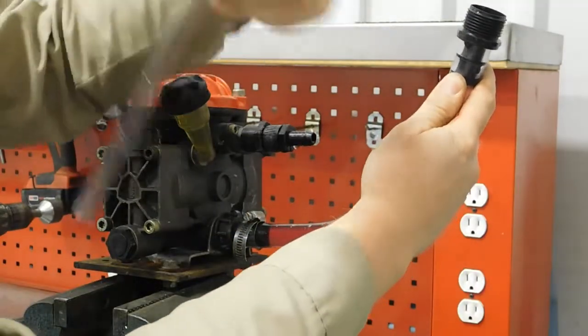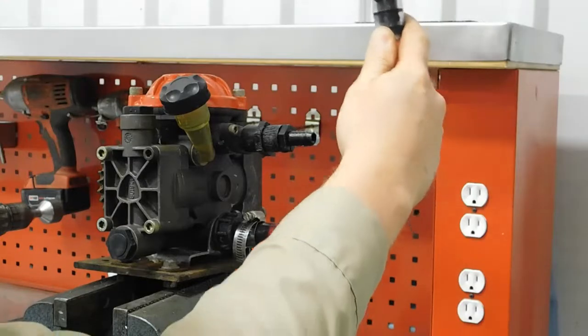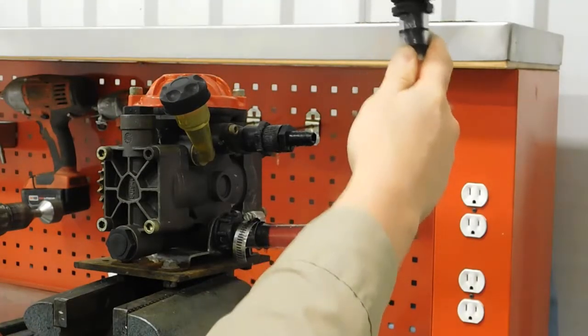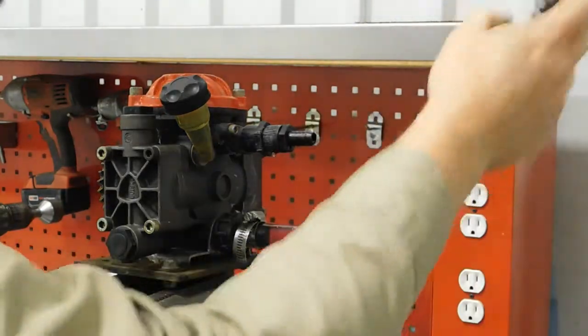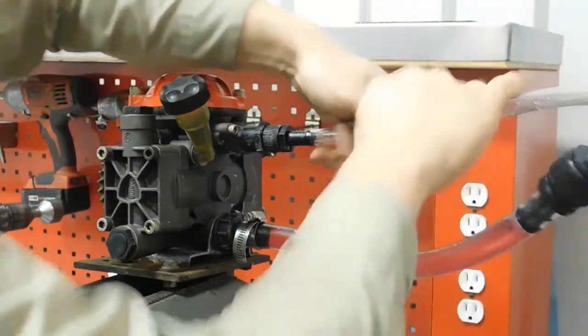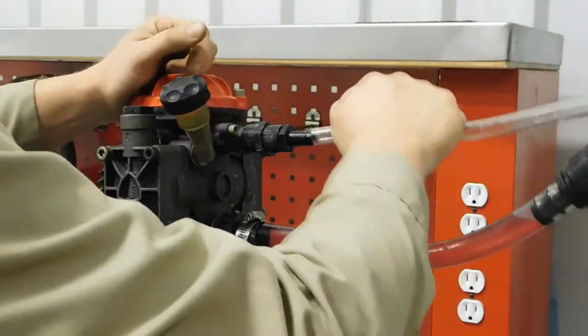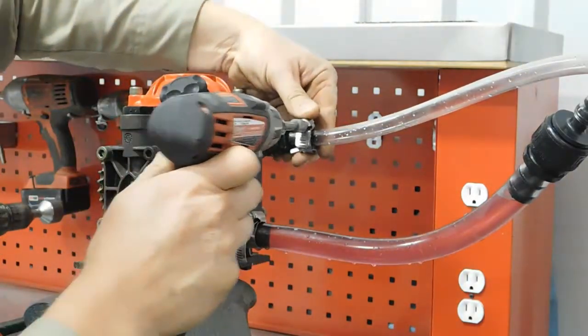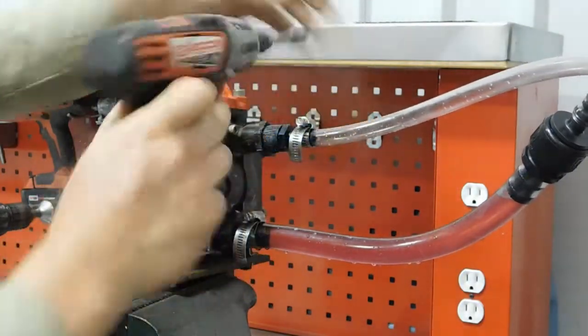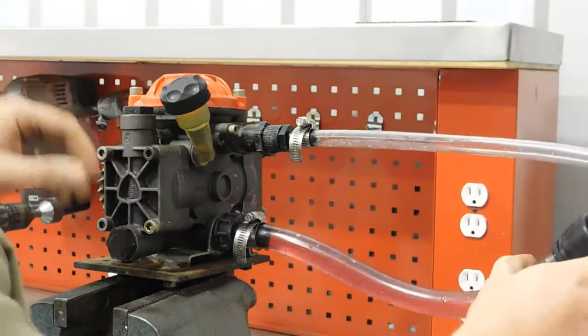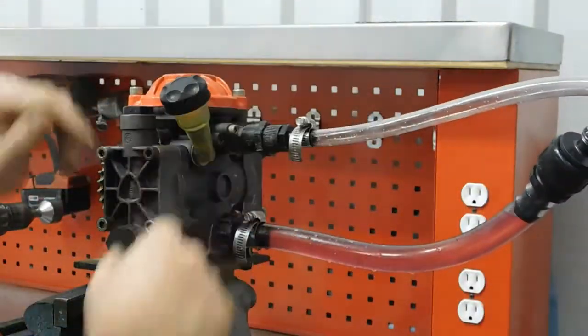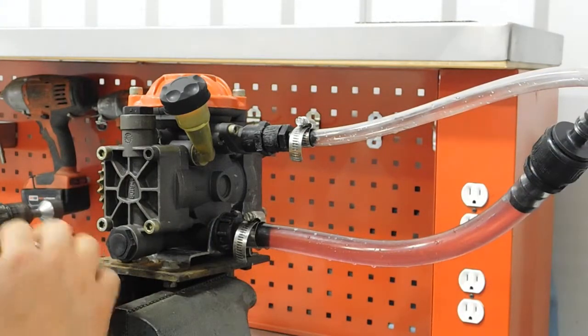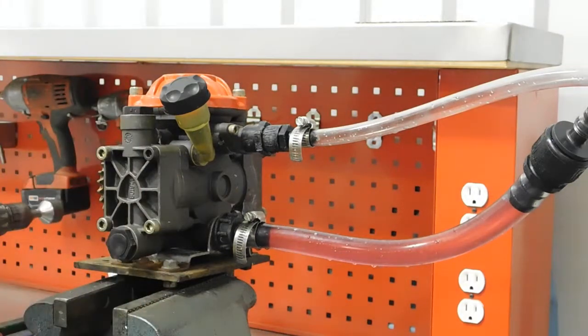Now you take the half-inch line with a half-inch fitting, connect the two in the center, put the clamp on the pressure side and tighten it down. Now this is what we call a flushed and winterized pump. This will be ready for you next season. You will never have a problem with this.